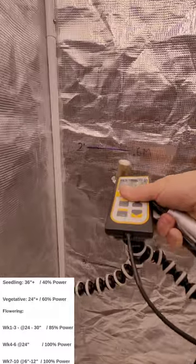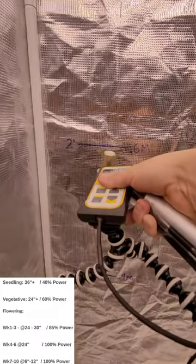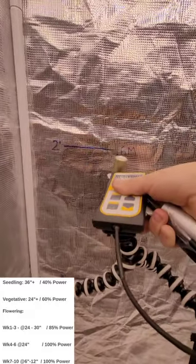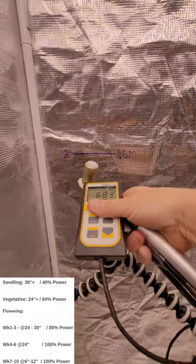This is how far your canopy would be away from the light. So the first three weeks of flower, we're going to be at 2 to 2.5 feet. Right here, this is the 2-foot mark, and let me show you some of the PAR readings at 85% on the dimmer.